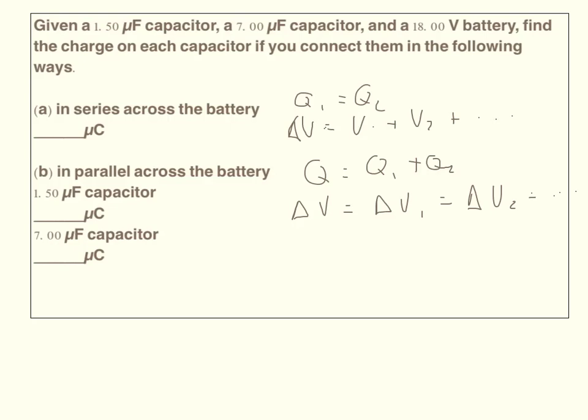Now the last relationship between parallel and series. In a series, the capacitance in farads, the 1 over the CEQ, or the equivalent capacitance of the whole thing, is equal to 1 over C1 plus 1 over C2. And then in parallel, CEQ, the capacitance of the whole thing, is equal to C1 plus C2. So it's an inverse relationship.